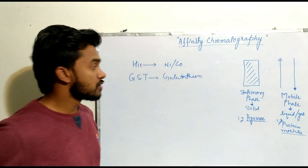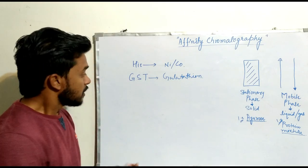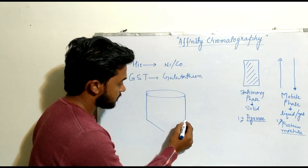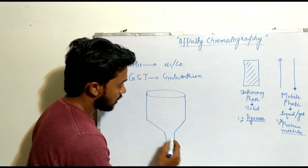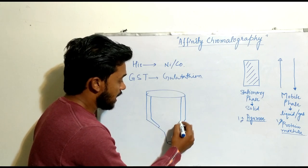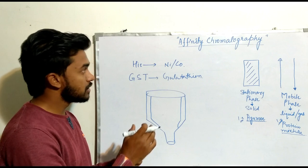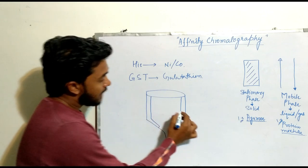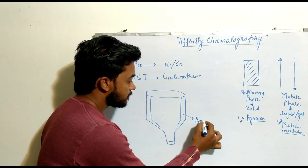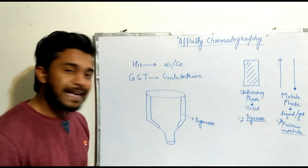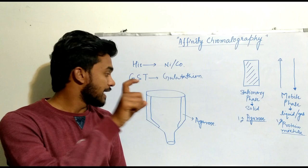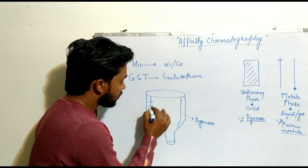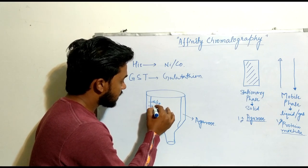Let me draw a column to show how Affinity Chromatography works. We are drawing this column just to make it easy to understand. Agarose is present on the walls of this column as the stationary phase. This agarose gel contains nickel or cobalt molecules that are integrated into it.